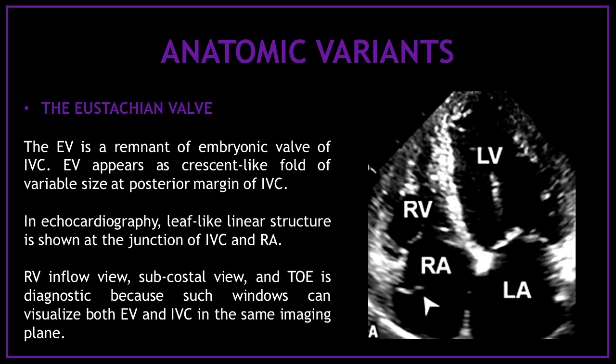The first common anatomic variant is the eustachian valve, which is a remnant of the embryonic valve of the inferior vena cava. It appears as a crescent-like fold of variable size at the posterior margin of the inferior vena cava. On echocardiography, a leaf-like linear structure is shown at the junction of the inferior vena cava and right atrium. The right ventricular inflow view, subcostal view, and transesophageal echo are diagnostic because these windows can visualize both the eustachian valve and inferior vena cava in the same imaging plane.